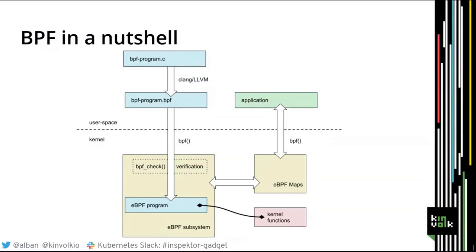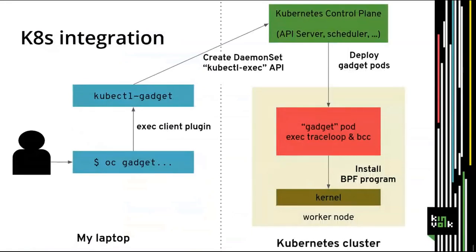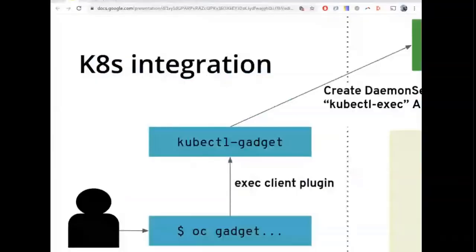Inspector Gadget is a command line tool you run on your laptop that communicates with the Kubernetes cluster only via the API server — it doesn't SSH to nodes or open ports. It's a plugin for kubectl and uses first-class Kubernetes objects like pods, DaemonSets, and configurations to deploy the gadget pod on all nodes. That gadget pod executes the BPF program — TraceLoop, BCC tools, or the network policy advisor — installs it in the kernel, and gathers events to report back to the user.